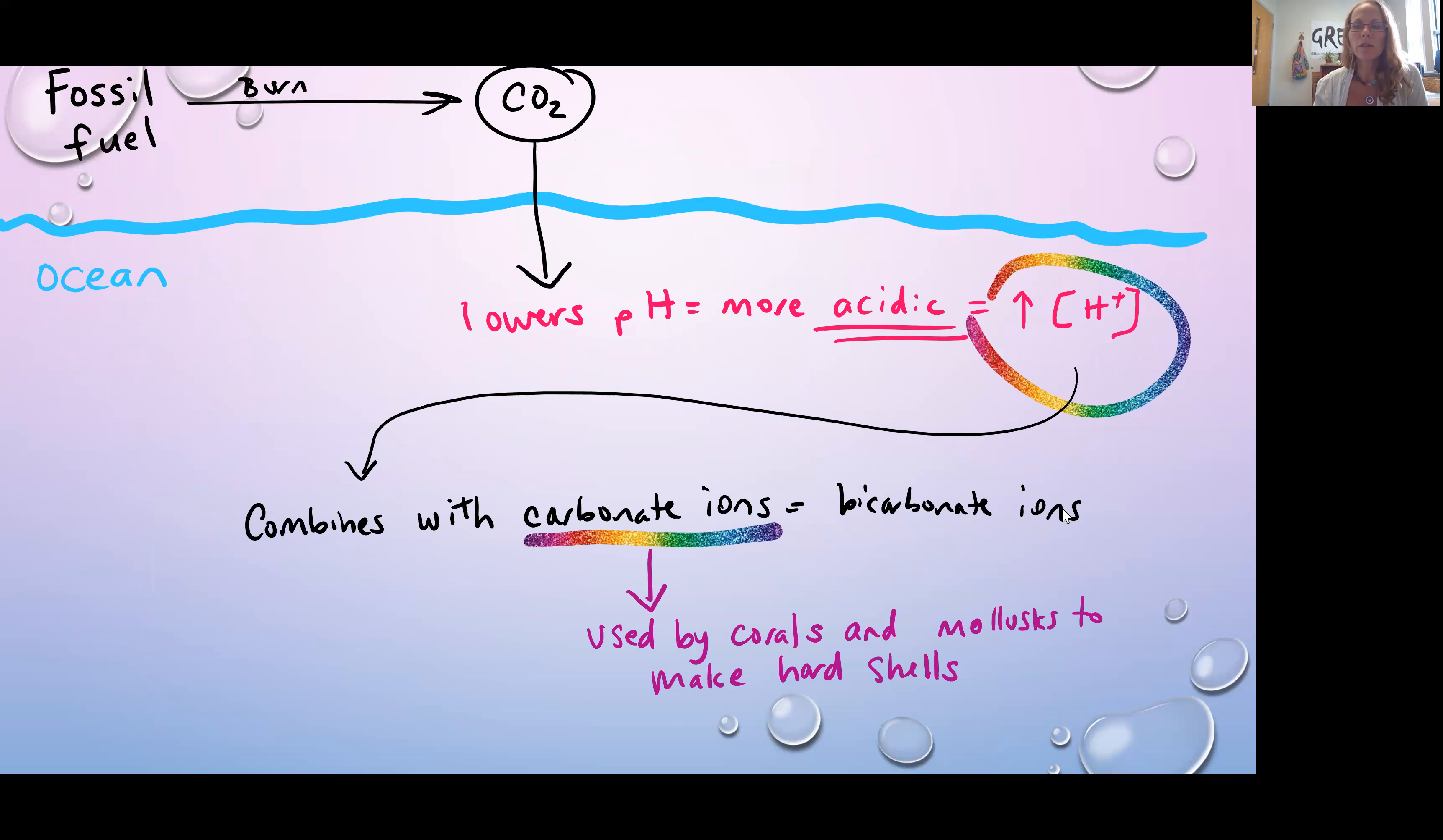Now that extra hydrogen ion is going to combine with another molecule that's in our ocean already, which is the carbonate ion. Those hydrogen ions combine with carbonate ions, and carbonate ions plus hydrogen ion form what's called bicarbonate ion. That's totally fine except that carbonate ion is used by corals and mollusks such as clams to make their hard shells and for corals to make those coral reef structures. If you have the acidic ocean environment with that extra hydrogen ion, instead of having carbonate ion to use for the animals, the corals and the mollusks, you're just making bicarbonate ion in the ocean. You're essentially removing that carbonate ion that should otherwise be available for those animals.